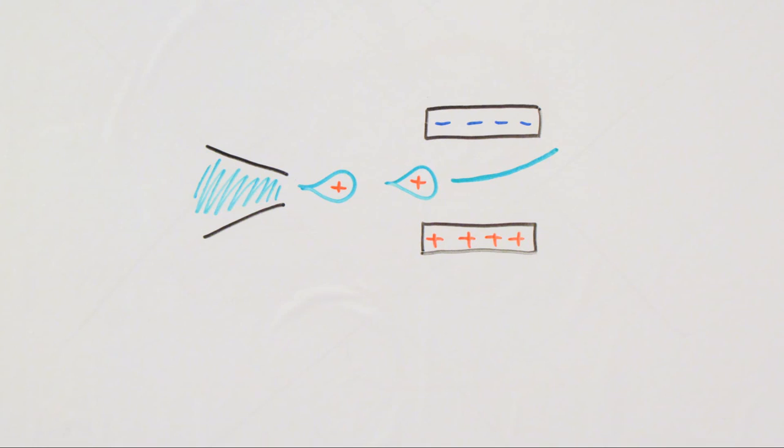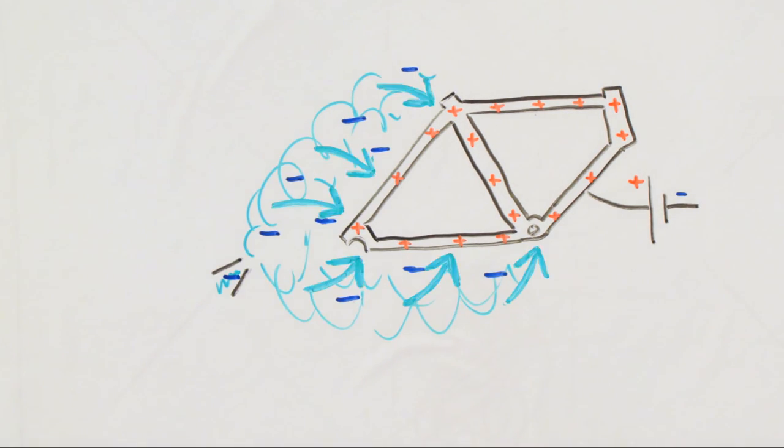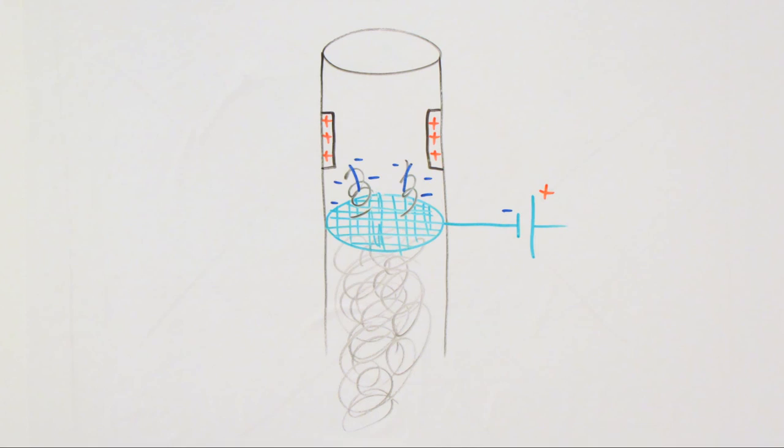We can use this idea to control the direction an inkjet printer squirts ink onto a page, to more efficiently paint metal frames, to remove particles from smoke in a chimney, and countless other applications. It's all just opposites attract.